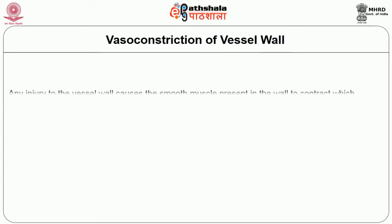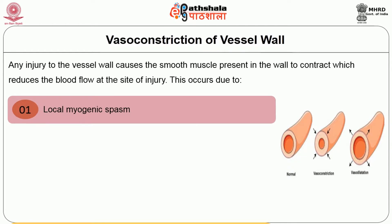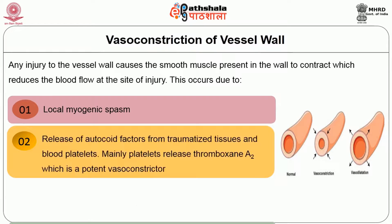The first step is vasoconstriction of the vessel wall. Any injury to the vessel wall causes the smooth muscles present in the wall to contract, which will immediately reduce blood flow to the site of injury. This occurs by the following mechanisms. First is local myogenic spasm — whenever there is injury, the smooth muscles in the vessel wall contract immediately. Second is the release of autocoid factors from traumatized tissues and blood platelets. The platelets release thromboxane A2, which is a potent vasoconstrictor that causes constriction of the blood vessel wall, preventing bleeding.